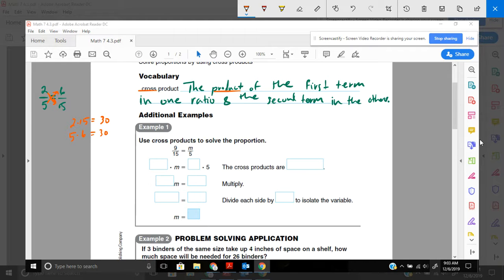If the cross products are equal, then the ratios form a proportion. Let's try an example of that. It says use the cross products to solve the proportion. I'm going to put in these arrows. That helps me remember. So what times M? I'm going to take 15 times M and I'm going to set that equal to 9 times 5.